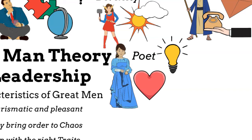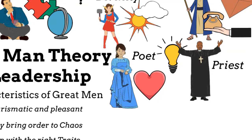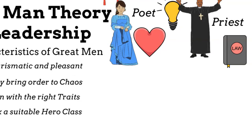Priest. Carlyle mentions Martin Luther as an example of a great man being a priest. Although Luther can be seen as quite the revolutionary character, Carlyle regards this as bringing order to chaos in this case. By the way, bringing order to chaos is essential to all heroes.